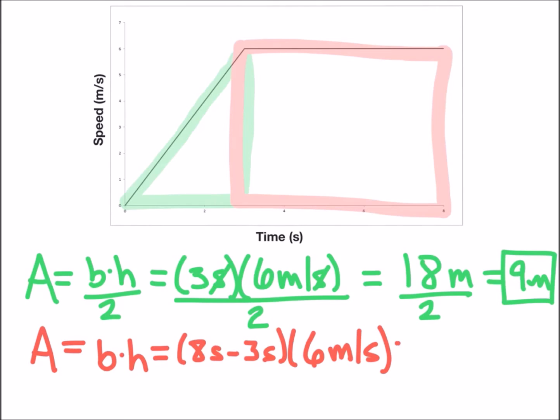And that's all going to be multiplied together. We can simplify it further to five seconds multiplied by six meters per second. Our units of seconds divided by seconds will cancel and we can rewrite the area of the rectangle as 30 meters.